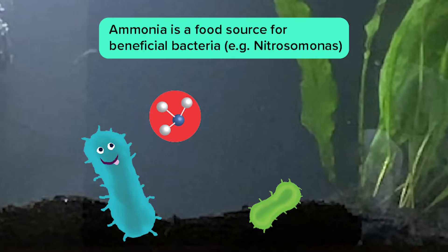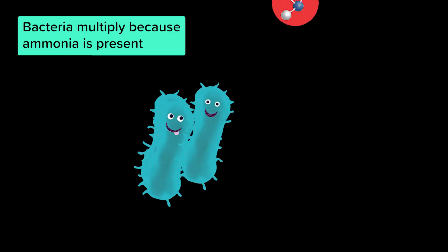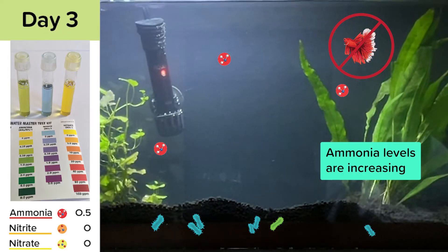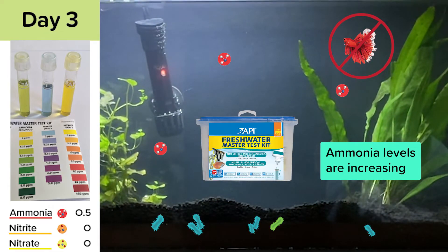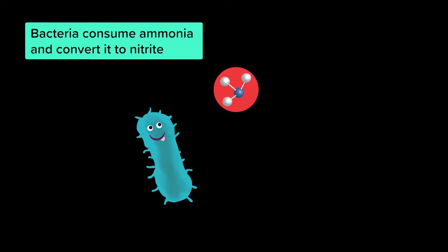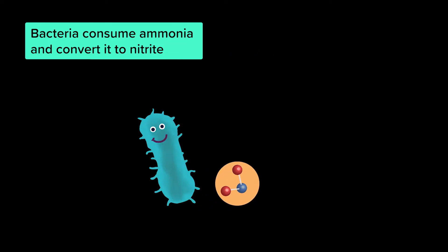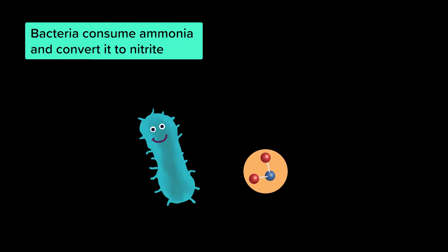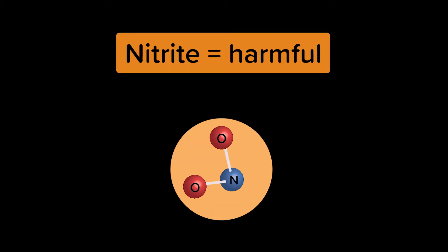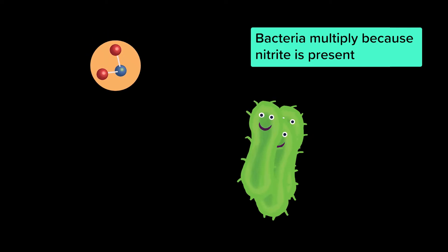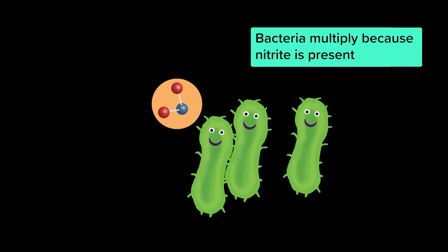Since we've just added ammonia, we have a food source for beneficial bacteria, and the bacteria will start to multiply. On day 3, I tested the water, which showed ammonia levels were increasing. When bacteria consume ammonia, they create a byproduct called nitrite. Nitrite is slightly less toxic than ammonia, but still harmful for fish. Nitrite is a food source for another type of bacteria, and now that nitrite is present, they will start to multiply.